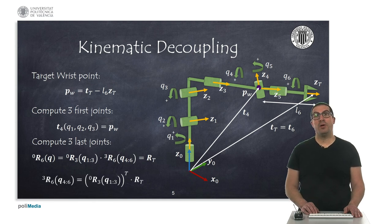Once the wrist point is known, then we can compute the desired values for Q1, Q2 and Q3 such as the robot can reach that target wrist point. Once these values are known, then we can compute the target orientation of the end effector with respect to the reference frame 3. We will see that in more detail later.